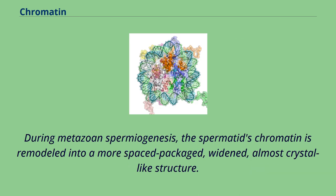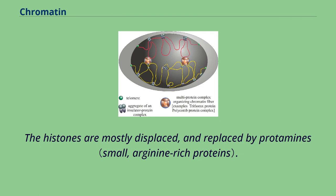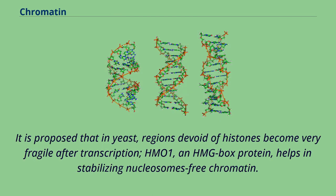During metazoan spermiogenesis, the spermatid's chromatin is remodeled into a more densely packaged, almost crystal-like structure. This process is associated with the cessation of transcription and involves nuclear protein exchange. The histones are mostly displaced and replaced by protamines. It is proposed that in yeast, regions devoid of histones become very fragile after transcription, and HMO1, an HMG box protein, helps in stabilizing nucleosome-free chromatin.